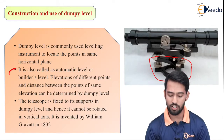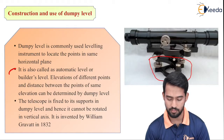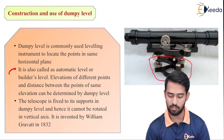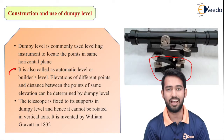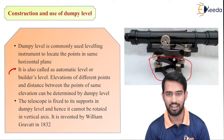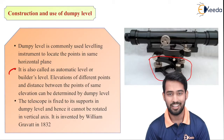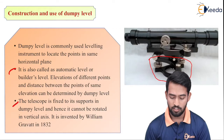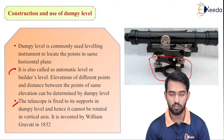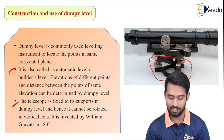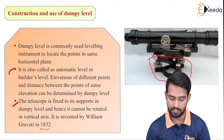Dumpy level is also called an automatic level or builder's level. The elevation of different points and the distance between points of the same elevation can be determined by dumpy level. We can find out the distance between elevations at the same level or different levels using dumpy level. The telescope is fixed to its support in dumpy level and hence cannot be rotated on the vertical axis. It was invented by William Gravitt in 1832.